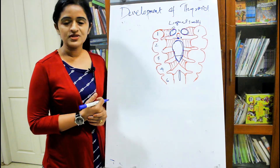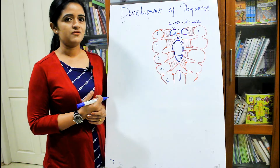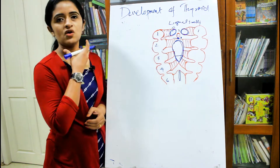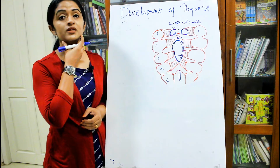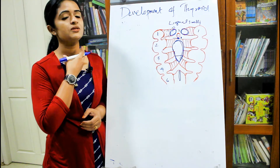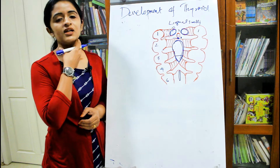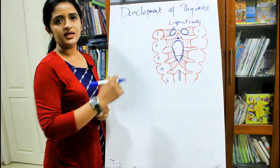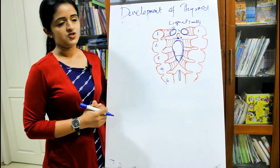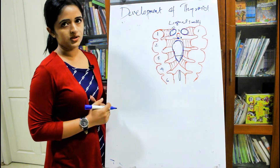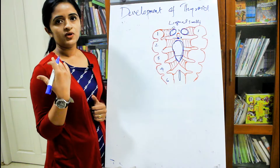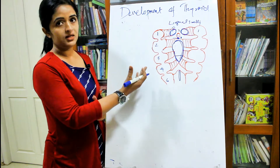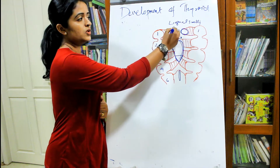Before viewing this session I would like all of you to see a session on the pharyngeal apparatus which I have done previously. This is a view of the pharyngeal arches. We know that there are many pharyngeal arches on the ventral aspect of the neck. If you take it out and see from the inner aspect, this inner aspect of the pharyngeal arches is lined by endoderm.